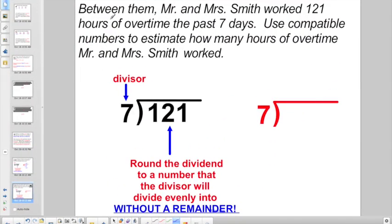Let's try one more. And here it says between them Mr. and Mrs. Smith worked 121 hours of overtime the past seven days. Use compatible numbers to estimate how many hours of overtime Mr. and Mrs. Smith worked. So works the same way. Round the dividend to a number that the divisor will divide into evenly without a remainder. Let's see what I got here. The first two digits here represent 12 and I'm dividing by 7. Well I know 12 can't divide by 7 evenly. But you know what can? 14 can, right? So I want to round 121 into 140.